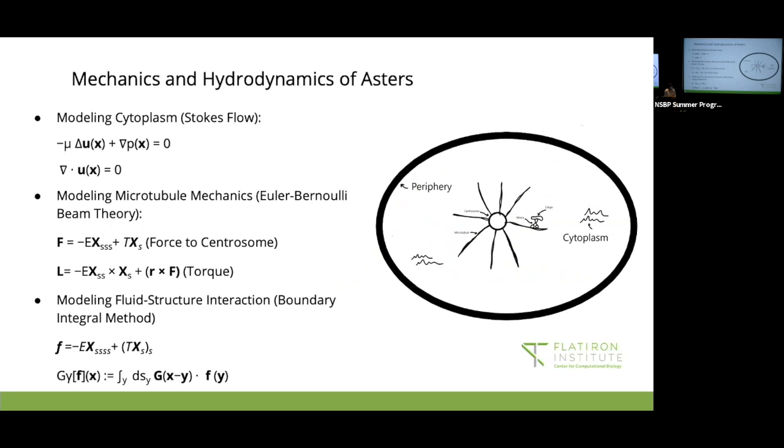So after we model the cytoplasm, we can move on to the way the microtubules might move. And to do that, we can use Euler-Bernoulli beam theory. So we can find the force that the microtubules exert on a centrosome using E to be the flexural modulus, which is kind of how bending the microtubules are. We have x versus a vector, s for the arc length, and then t for the tension. Then we can use this force to find the torque on the centrosome. So we have the same variables from before, but we also have r, which is a vector from the center of the centrosome to the outer end where the microtubule attaches to it.